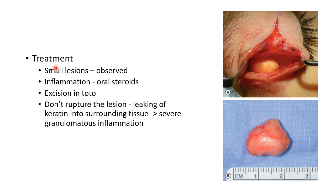Coming to treatment of dermoid cyst, small lesions can be observed. When there is associated inflammation, we can give oral steroids. The treatment of choice for both superficial and deep dermoid cyst is excision in toto. Remember, we should not rupture the lesion because rupture causes leaking of keratin into surrounding tissue, leading to severe granulomatous inflammation. This picture shows a superficial dermoid cyst and this picture shows the excised specimen of the same.